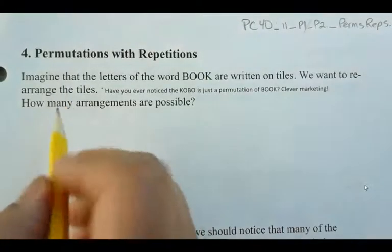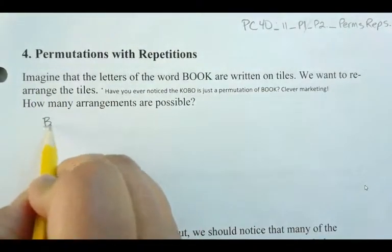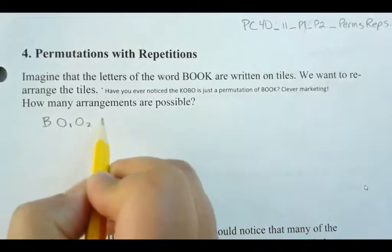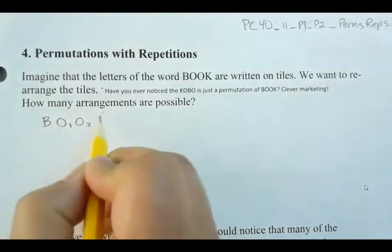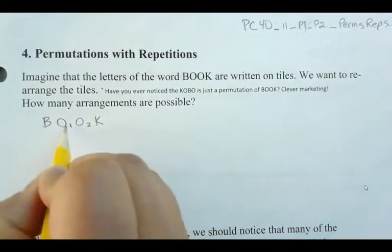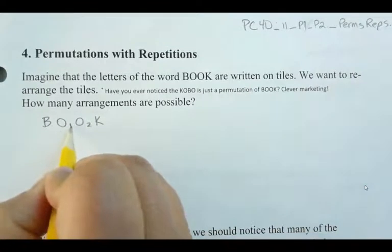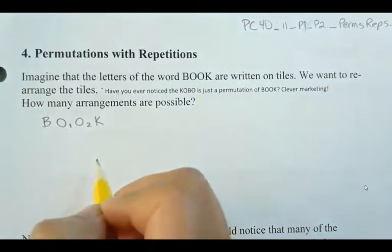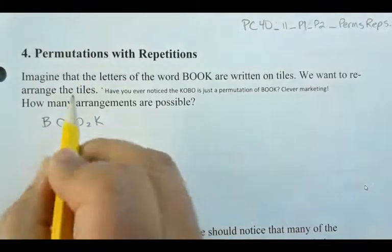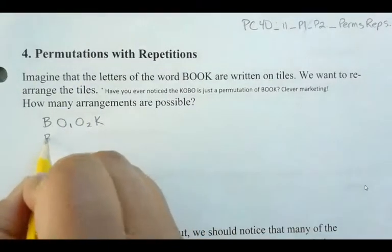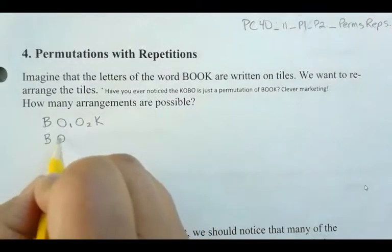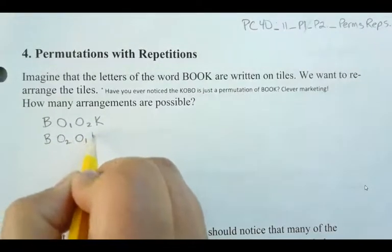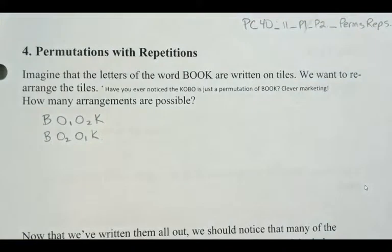Since there are two letter O's, I'll make them look different by writing O sub 1 and O sub 2, so we know which ones we're using — otherwise we can't keep track of what we're doing. So that's my first arrangement, and then I can swap the O's with each other, and I still have the word BOOK.